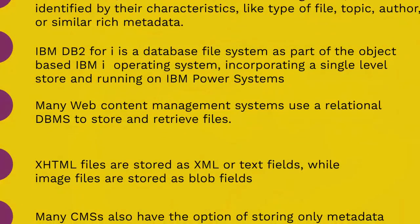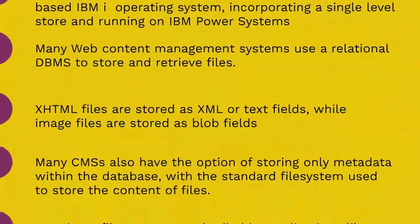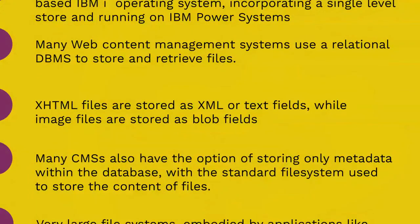IBM DB2 for i, formerly known as DB2/400 and DB2 for i5/OS, is a database file system as part of the object-based IBM i operating system, formerly known as OS/400 and i5/OS, incorporating single-level storage and running on IBM Power Systems. It was designed by Frank S. Saltis, IBM's former chief scientist for IBM i.